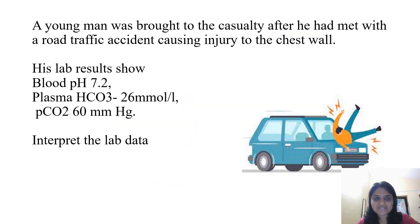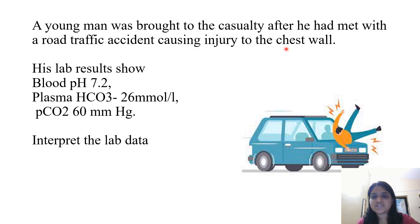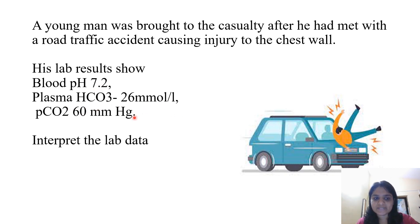Moving on to the first question. A young man was brought to the casualty after he had met with a road traffic accident causing injury to the chest wall. His lab results show blood pH 7.2, plasma bicarbonate 26 millimoles per liter, PCO2 60 millimeters mercury. Interpret the lab data.